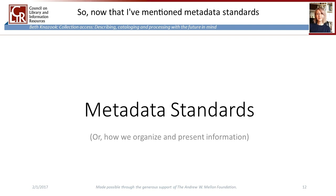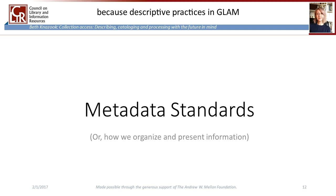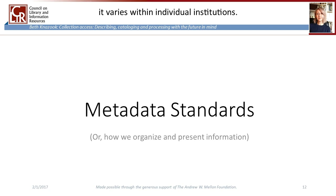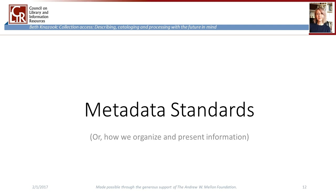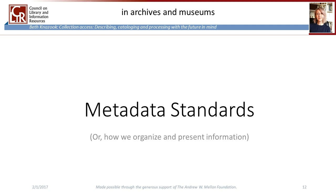Now that I've mentioned metadata standards a few times, I think it's time we took a closer look at them. Metadata standards govern how we organize and present information about collections, and we use these standards primarily because standardized information promotes the exchange of information. This exchange is necessary because descriptive practices in GLAM organizations vary considerably across the field, and even sometimes within individual institutions. Although we might record a lot of similar information like title or date, we put the emphasis on different areas of knowledge. There's an importance placed on describing the provenance of materials in archives, while in museums there's a lot of weight given to explaining what things are. There's a much greater emphasis on subject as an entry point in libraries, which is something we've only recently seen in archives and museums, brought about by the need to provide subject access to digitized image collections.